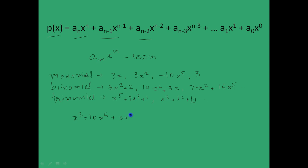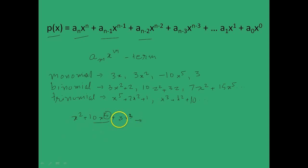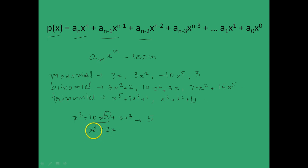So in this polynomial, the term with the highest power of x is x to the power 5, and the power in question is 5. Therefore, the degree of this polynomial will be 5. For another example, take x cubed plus 2x — the highest power associated with any of the terms is 3, and so the degree of this polynomial is 3.